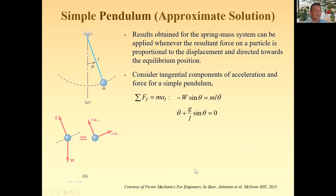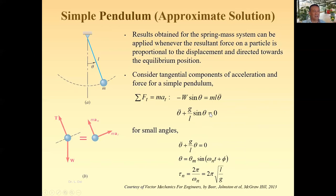Nonlinear governing equations like this are very difficult to solve, if not impossible. So what people do is linearize them. When theta is very small, we can approximately assume that sine theta equals theta. Many people accept this approximation. We replace sine theta with theta, and then we have a linear equation. With a linear equation, we can find the solution, we can find the period of the motion — it's a periodic motion. Everything is beautiful.